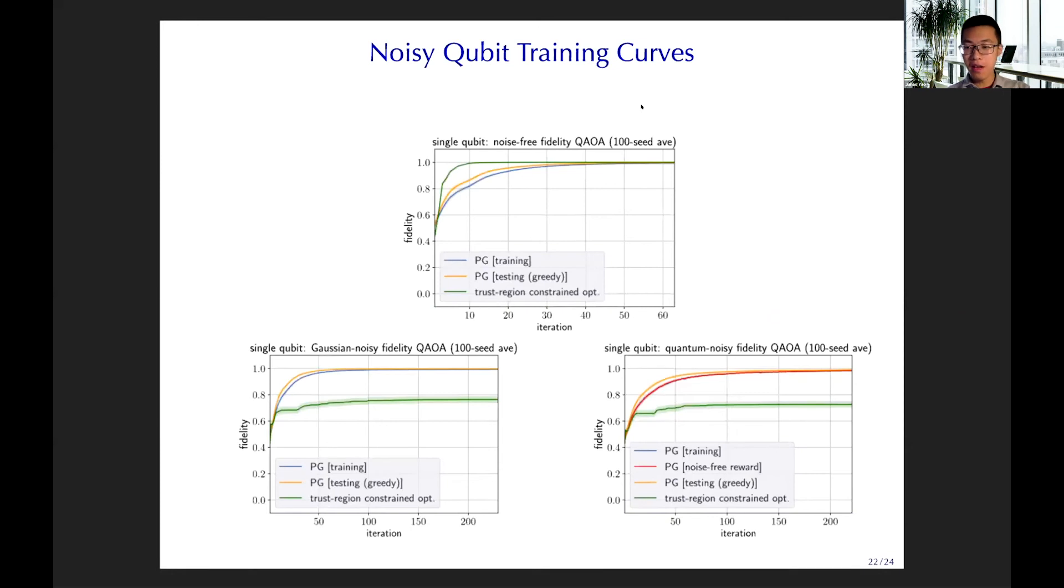So here, I also do some, so here are extra slides. This example is, we can see our policy gradient and other optimization. They work pretty well in the noise-free cases, but when we add the noise, like the Gaussian noise or the quantum noise, the PGQAOA wins later, but other optimization, like the trust region constrained optimization, cannot give you the unit fidelity in this case.